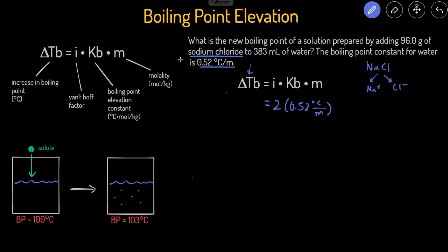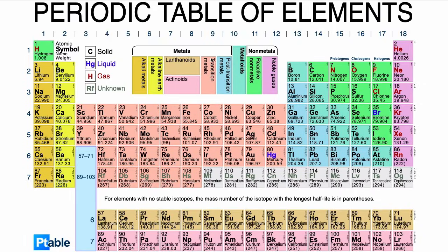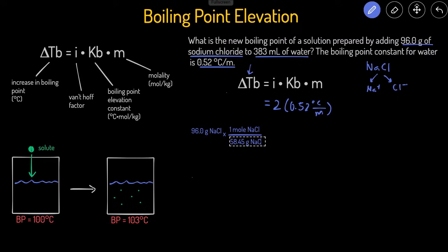Now we need to calculate the molality, which equals moles of solute divided by kilograms of solvent. Our solute is 96 grams of sodium chloride. We start by converting 96.0 grams of NaCl into moles by dividing by the molar mass. Adding the molar masses of sodium and chloride gives roughly 58.45 grams per mole of NaCl. So 96 divided by 58.45 gives us 1.64 moles of NaCl.